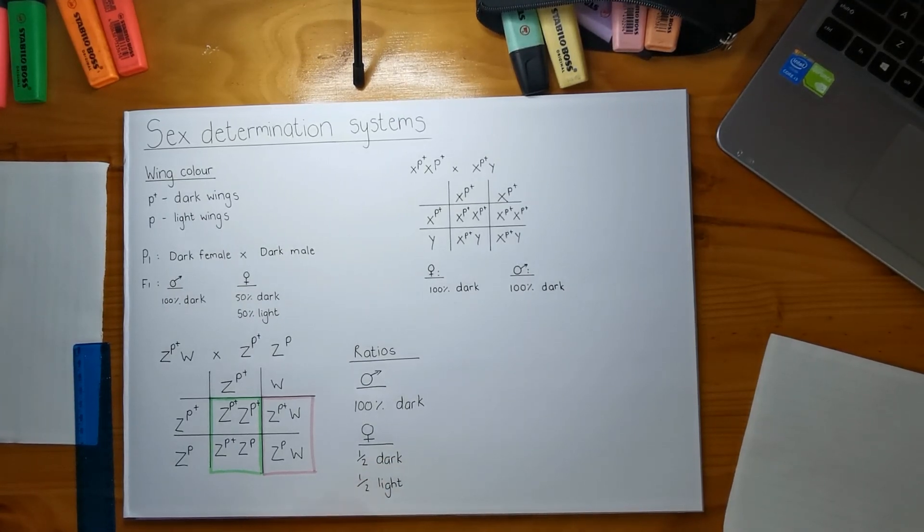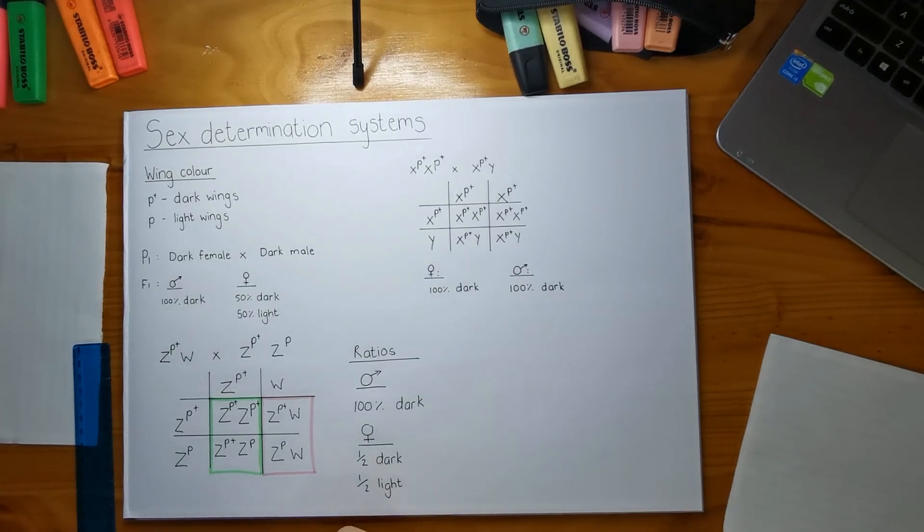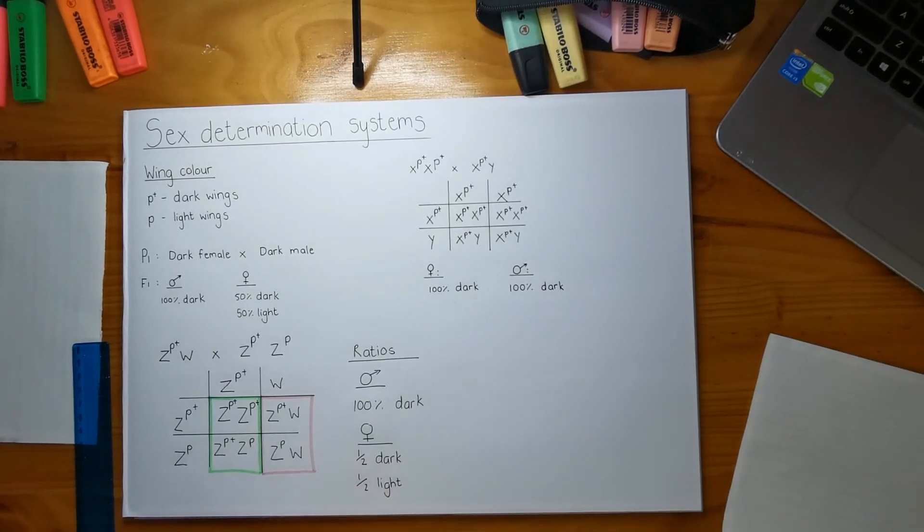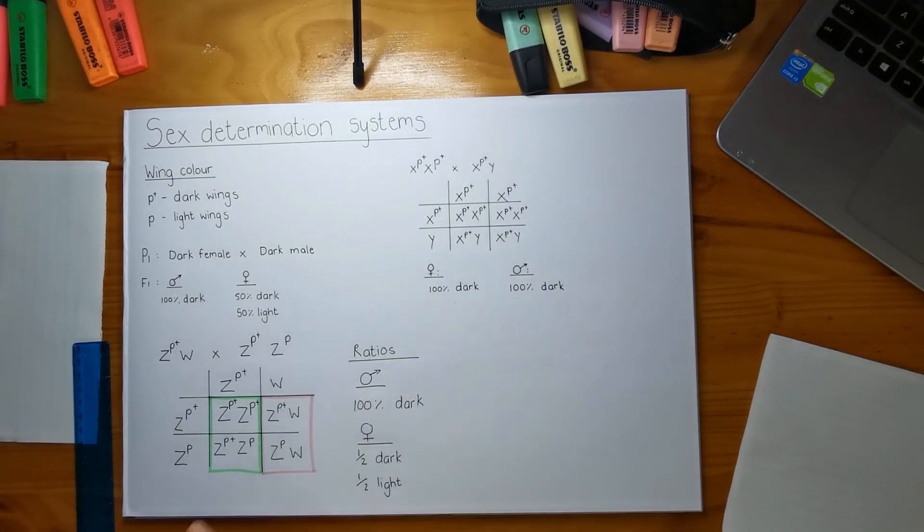You can also just say that your light wing allele is the loss of function mutation allele and it's recessive, and your dominant dark wings allele is the wild type allele. Then you can also say that this gene is sex linked as well, because it is on their sex chromosomes. So that's all you really need to know.